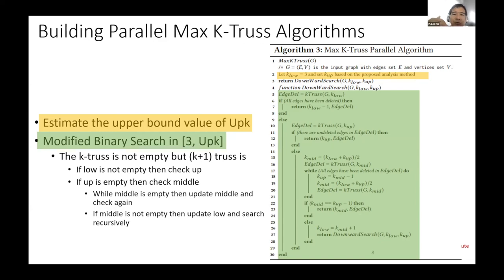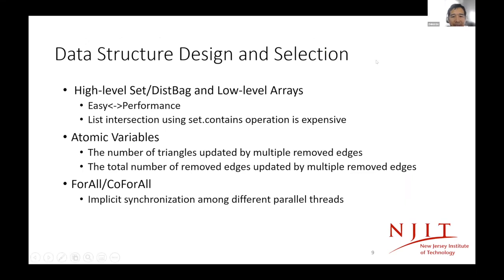And the truss decomposition method is straightforward. We just use our optimized parallel K-truss method and we increase the K value step by step until the K-truss is empty. It means that no subgraph can be found in the graph. So this is our three different kinds of truss analytic methods.